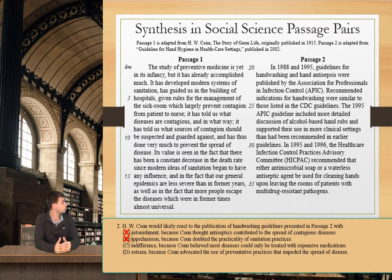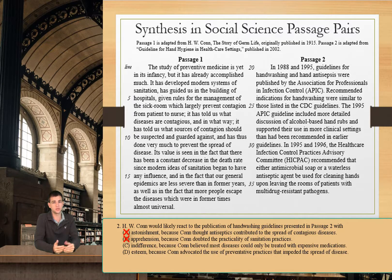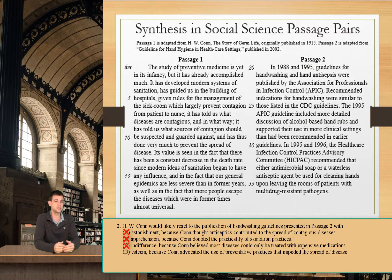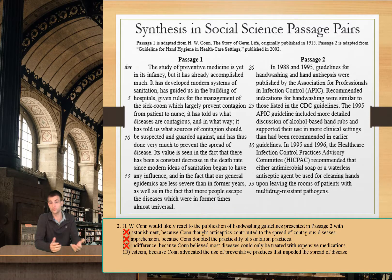Choice C tells us Kahn will react with indifference because he believed most diseases could only be treated with expensive medications. Kahn is very interested in preventative medicine — he liked the idea of sanitation and said it could help prevent the spread of disease. So we will eliminate C as well. That leaves us with D, which says Kahn will react with esteem because he advocated the use of preventative practices that impeded the spread of disease. We said he would react positively and liked the idea that sanitation could prevent the spread of disease, so D is the correct answer.